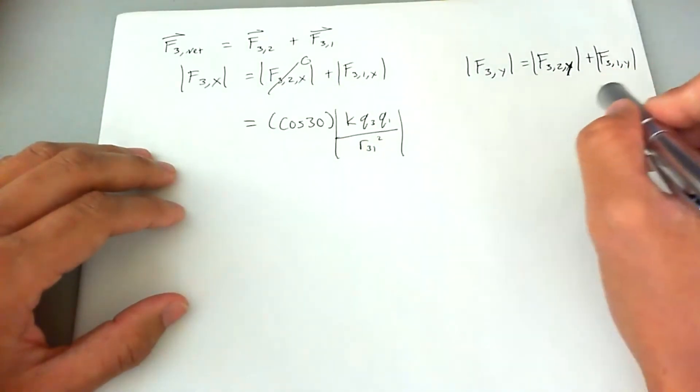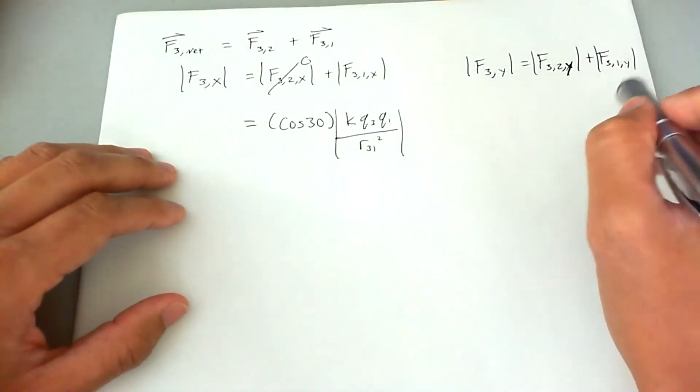We're going to see here that we're going to have to use a sine, which is a leg that's opposite of the 30 degrees in order to analyze the y component of charge one acting on charge three.